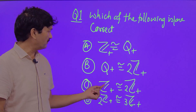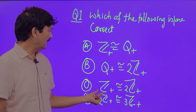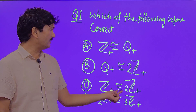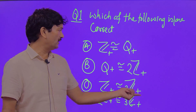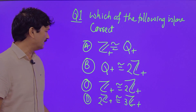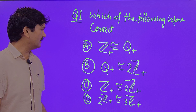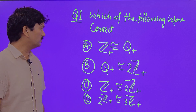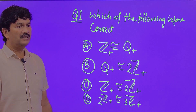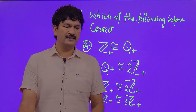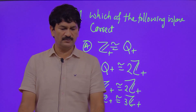We're talking about binary operation addition: Z with respect to addition is isomorphic to 2Z with respect to addition, and 2Z with respect to addition is isomorphic to 3Z with respect to addition. Please comment and share, thank you.